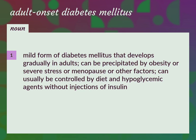A mild form of diabetes mellitus that develops gradually in adults. It can be precipitated by obesity, severe stress, menopause, or other factors. It can usually be controlled by diet and hypoglycemic agents without injections of insulin.